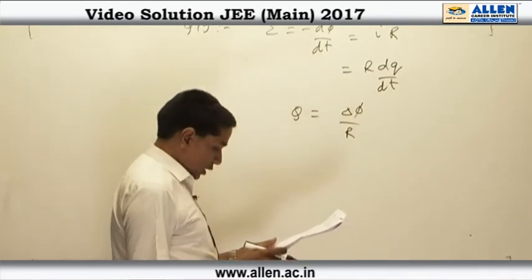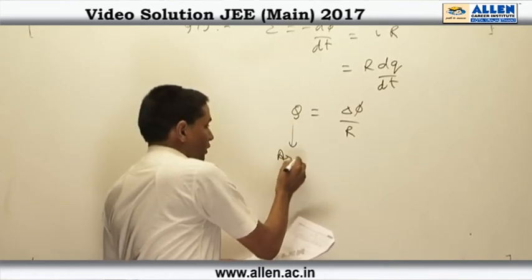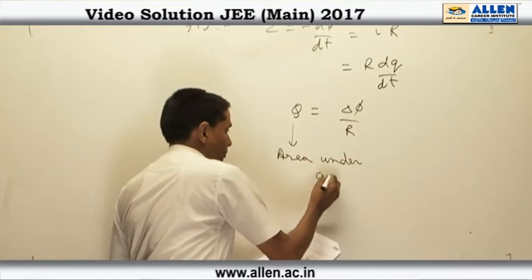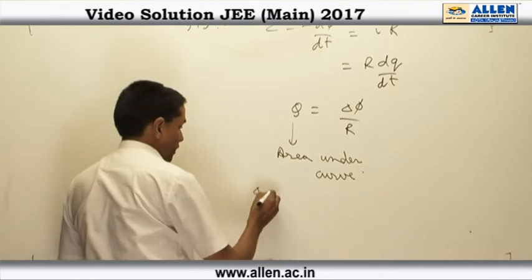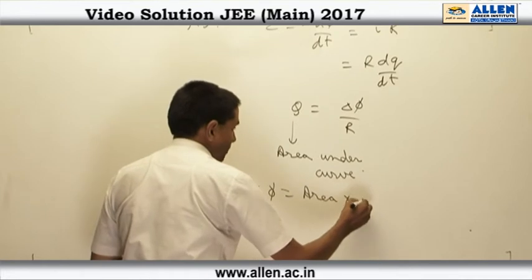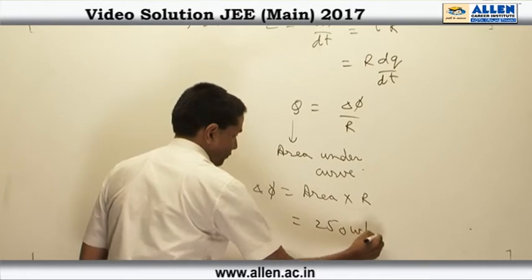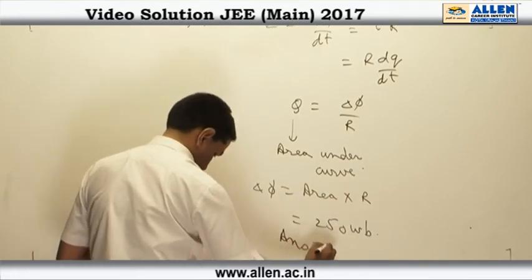Here the current versus time gives you the area under this curve gives us the charge flown. So the magnitude of change in flux will be the area under the curve given, multiplied by resistance, which comes out to be 250 weber. So the answer is 1.